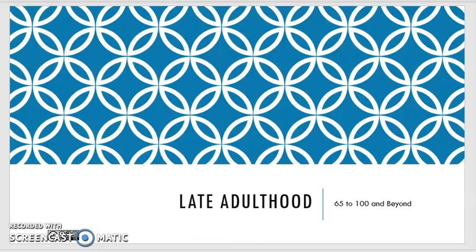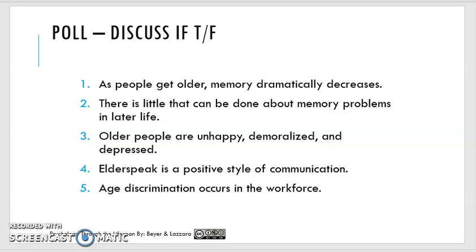Hi class! We are on to chapter 11 with late adulthood, basically ages 65 and beyond. I'm going to give you an opportunity for an extra credit assignment. After you finish reading through chapter 11, go ahead and respond true or false for the five questions and give me a sentence responding why you picked that true or false for each one. It's optional extra credit, and these are some of the topics that will be highlighted in what we talk about today.